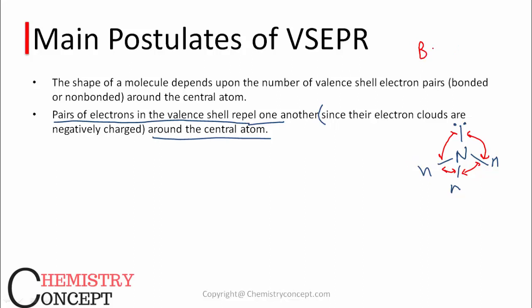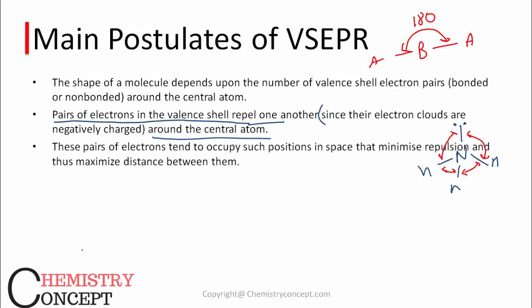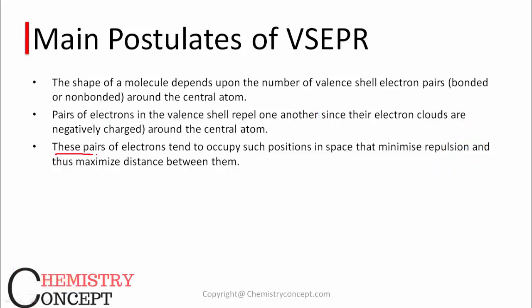Electrons will repel one another because they are all negatively charged, so they will try to be as far apart as possible from one another. For example, if there are 2 bonds, they will repel one another and go as far as possible, resulting in a linear structure with a 180-degree bond angle. The geometry depends on both bond pairs and lone pairs, and these repel one another to get positions as far as possible in space.